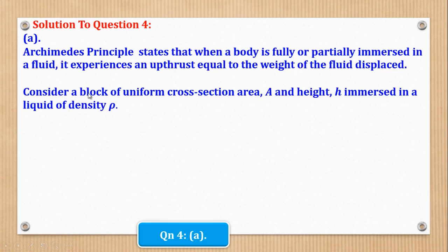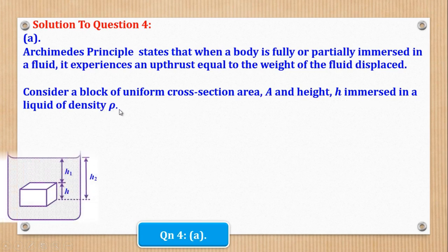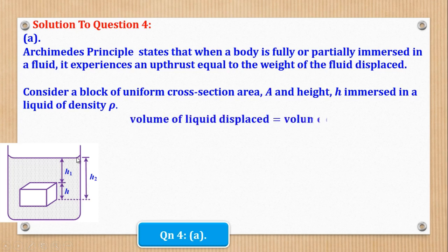In illustrating, we shall consider a block of uniform cross-section area A and height H immersed in a liquid of density rho. This is the block of uniform cross-section area A and height H as you see here. Let's say that its top surface is at a depth H1 below the surface of the liquid, and the bottom surface is at a depth H2 below the surface of the liquid.